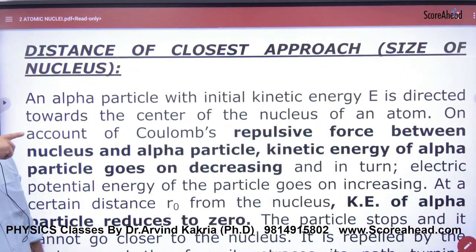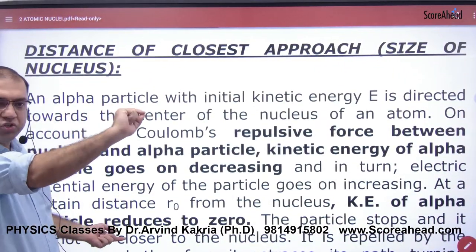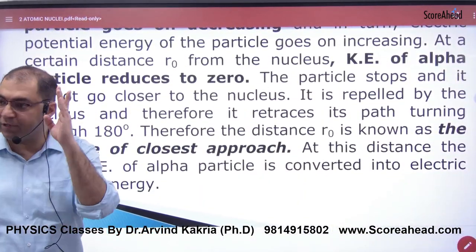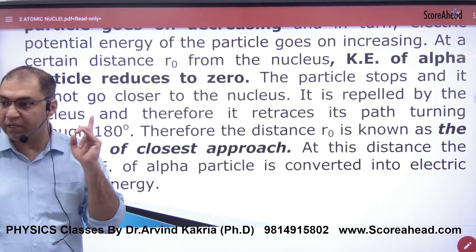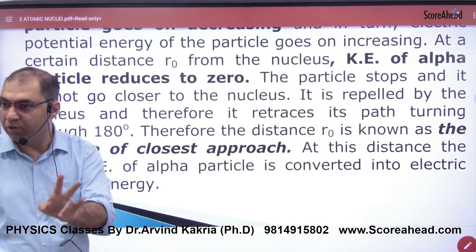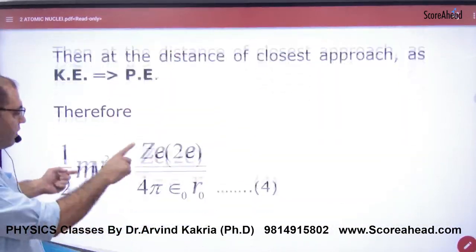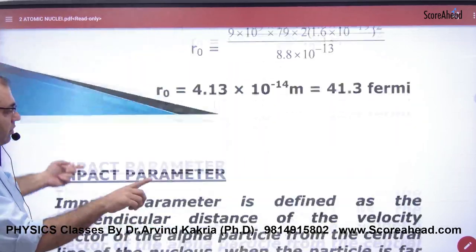Distance of closest approach - we have done it. Write from handwritten sheet. Don't do it from here. Refer handwritten sheet. You have to do it again. If you have not marked the marking, then you will have to do it again. So write refer handwritten sheet. This is all we have done. Distance of closest approach we have done. Let's leave it from here.